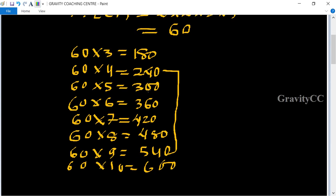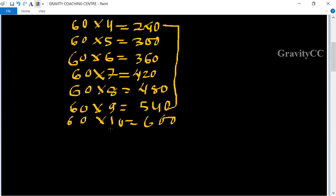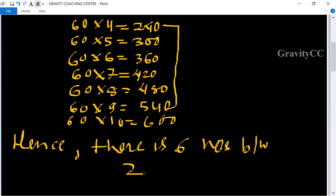There are 1, 2, 3, 4, 5, 6. So hence, there are 6 numbers between 200 and 600.